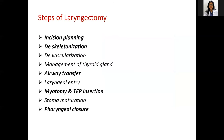Coming to the steps of surgery, these major steps may be performed in different sequences based on surgeon preference or individual case. At the start of surgery, a direct laryngoscopy is again performed to confirm operability and possible reconstruction. After induction of anesthesia, the patient is placed supine with neck extension.